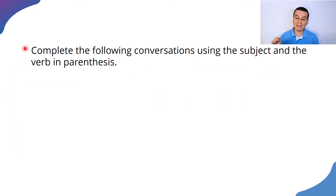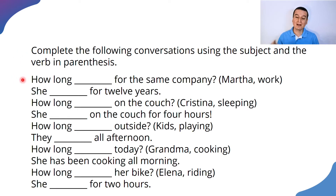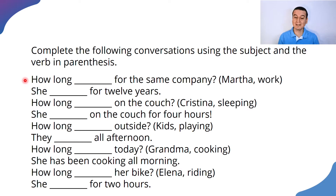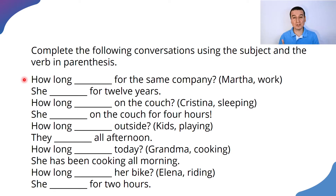This is very simple. The instructions are: complete the following conversations using the subject and the verb in parentheses. All these sentences have some blanks that we need to complete. They have one subject. The first sentence, for example, has Martha as a subject, and the verb we need to use is 'work.' We have to complete the sentence with something like 'how long has Martha been' — we need to decide: is Martha singular or plural? Do we use 'have' or 'has'? We need to use a form of 'have' plus 'been' plus the main verb in the -ing form.